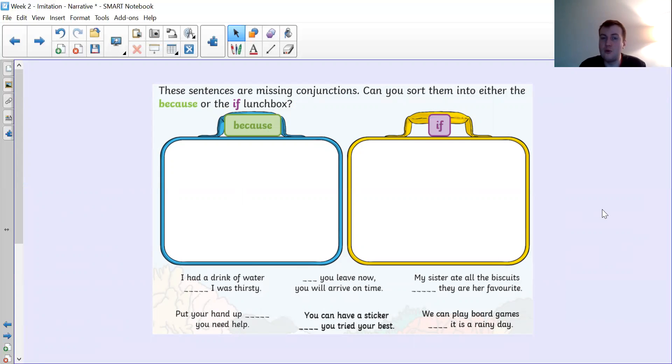Sentences here with the missing conjunction, either because or if. So your job is to put them for each sentence. Will it be because or will it be if? I had a drink of water, I was thirsty. So would that be I had a drink of water because I was thirsty or I had a drink of water if I was thirsty? Which one would it be? Do it for all of them. Pause the video, have a go. So hopefully you know that this one is because. Because I was thirsty, so I had a drink. It was because I was thirsty. This one, if you leave now you will arrive on time. That one is if.